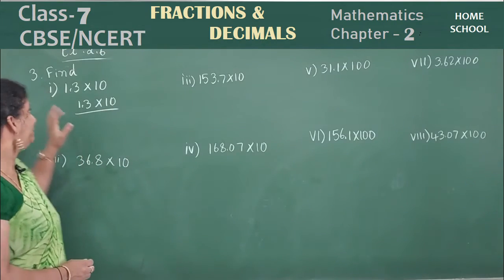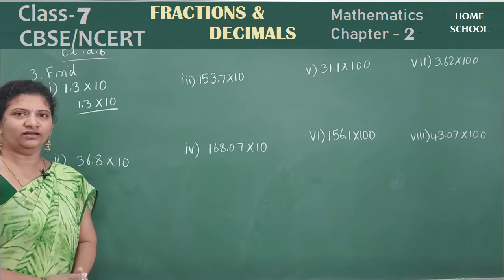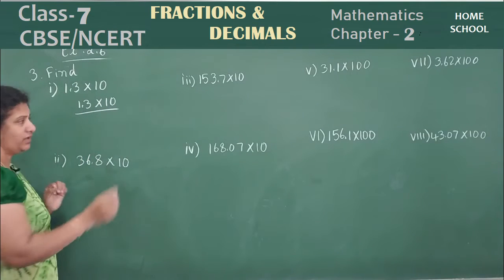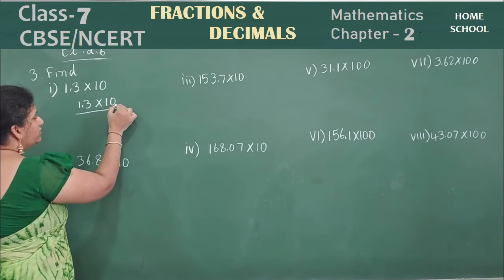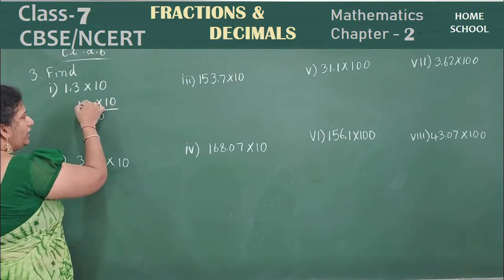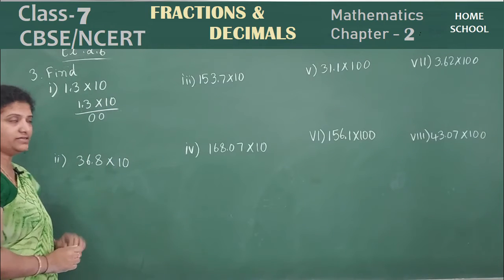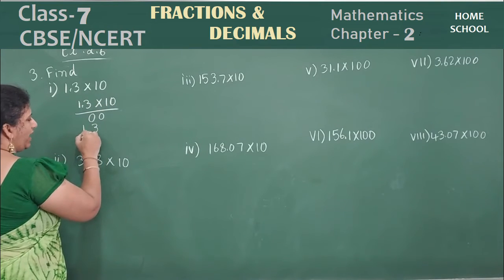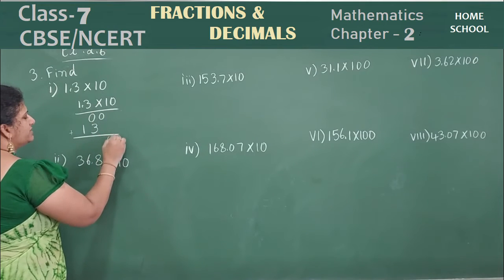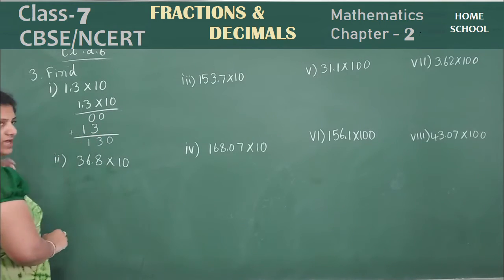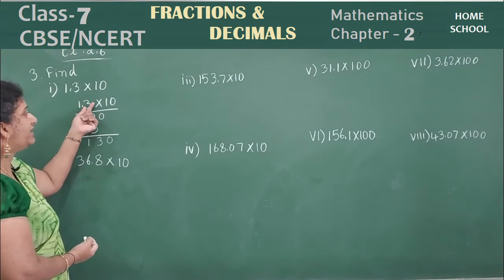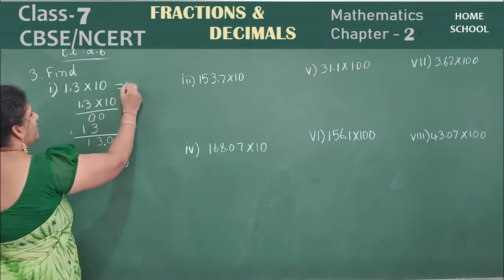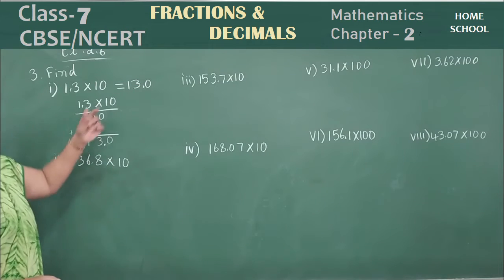Let's see the third main problem. Find: 1.3 into 10. Rewrite: 1.3 into 10. Start multiplying with 0 first — 0 into 3 is 0, 0 into 1 is 0. Then multiply with 1 — 1 into 3 is 3, 1 into 1 is 1. Add: 0 plus 3 is 3, then 1. After 1 decimal value, put the point. That is 13.0 is the answer.